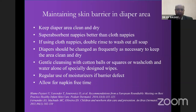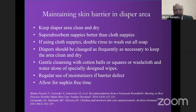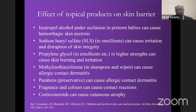Regarding maintaining the skin barrier in the diaper area: keeping the diaper area clean and dry is the priority. Super absorbent nappies are much better compared to cloth nappies. If using cloth nappies, double rinse to wash out all soap content. Diapers should be changed frequently to keep the area clean and dry. Clean the diaper area gently with cotton balls, wash cloths, and water, or specially designed wipes. Use moisturizers regularly if there are barrier defects, and allow nappy-free time.